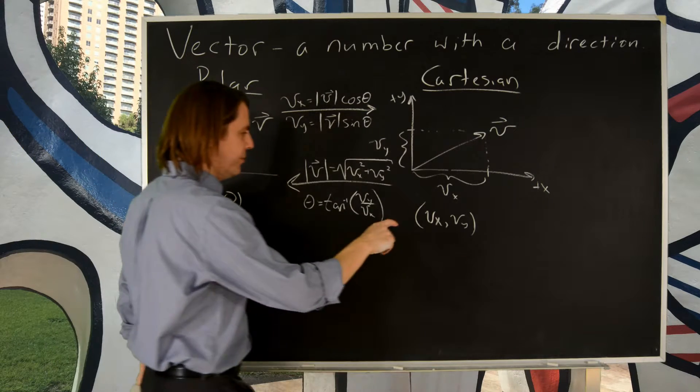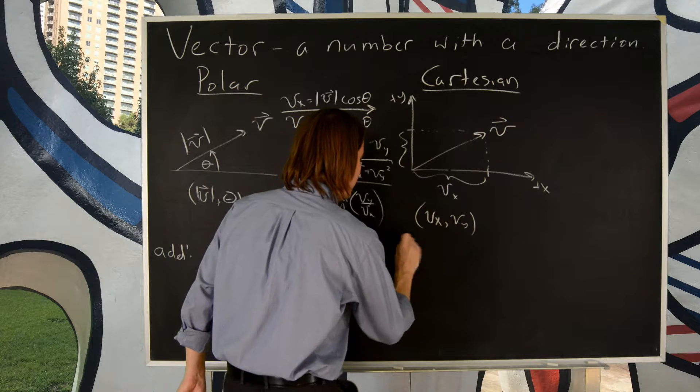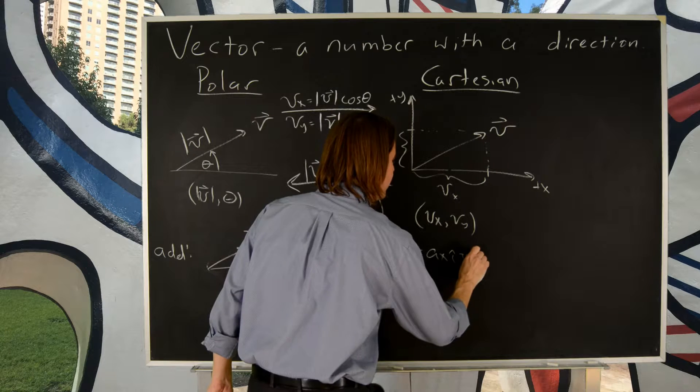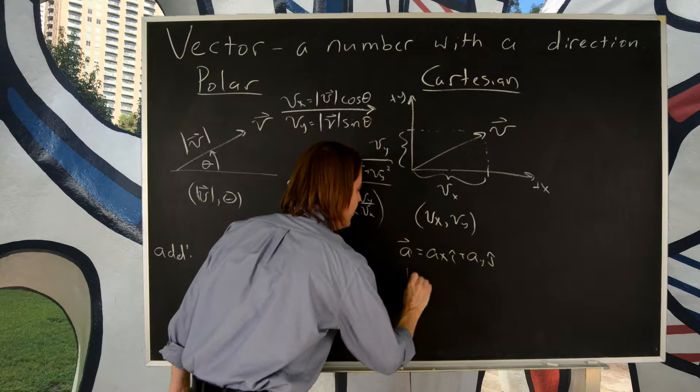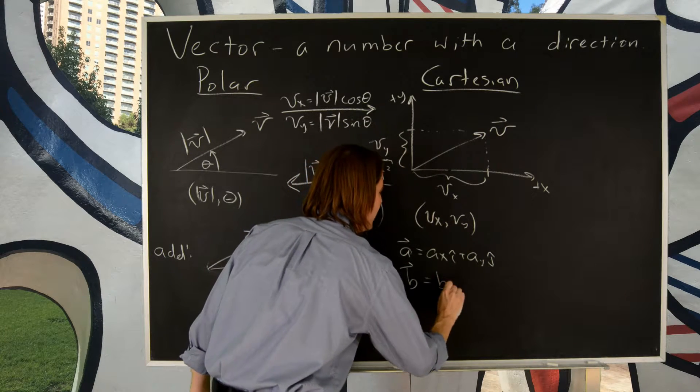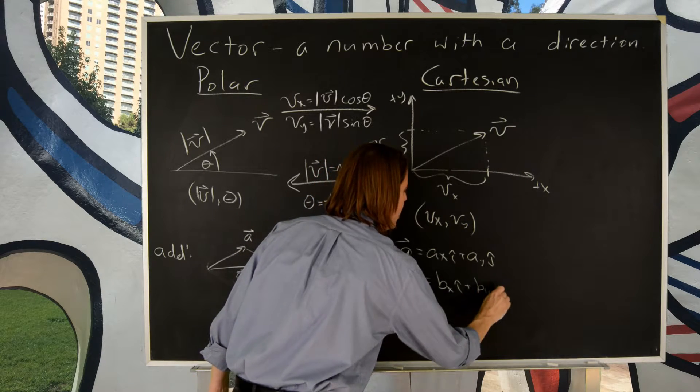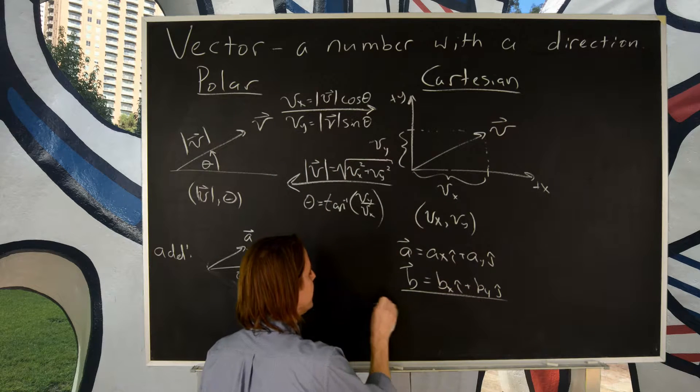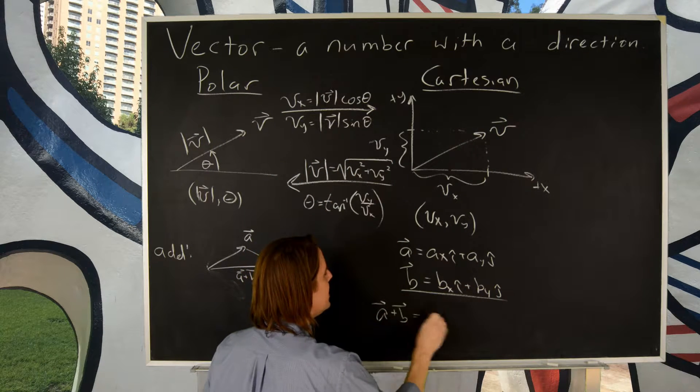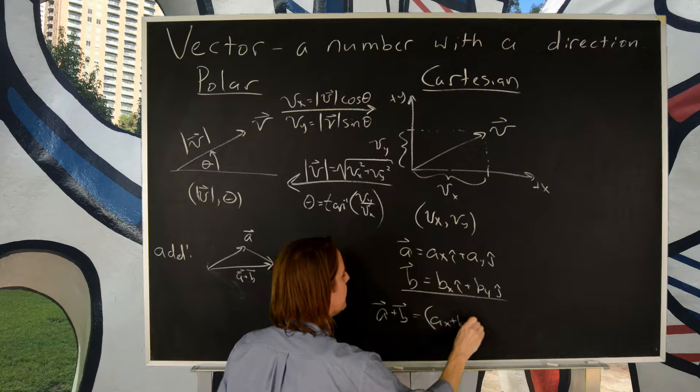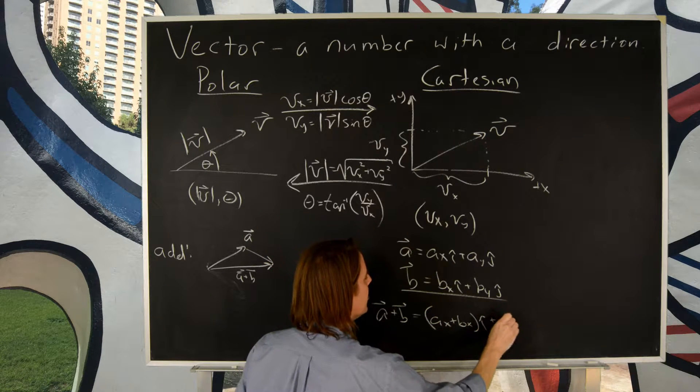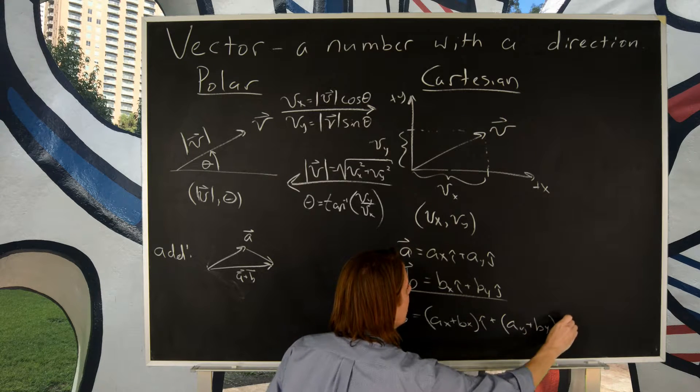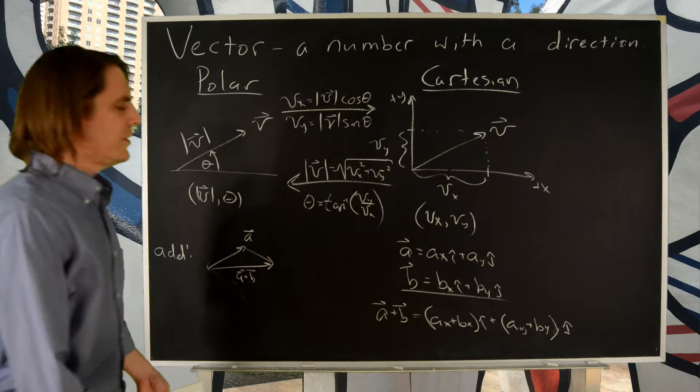In Cartesian, if you wanted to add two vectors, then you would have known that A is AX i hat plus AY j hat. And you would have known that B is BX i hat plus BY j hat. And to get the sum, you just add them. You would know that the vector A plus B is add the components: AX plus BX i hat plus AY plus BY j hat. And that's how you add.